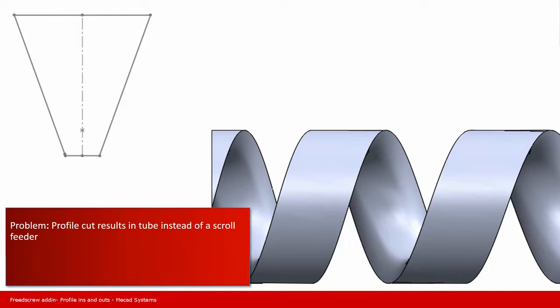Our next problem is when the profile cut results in a tube instead of a scroll. Now this sometimes has to do with the fact that this angle here might be too great.